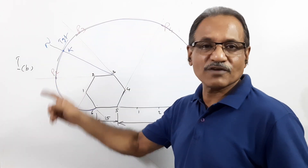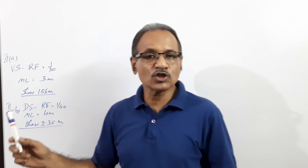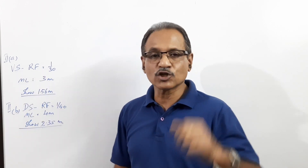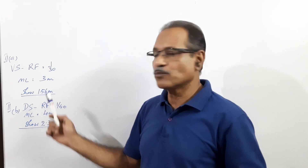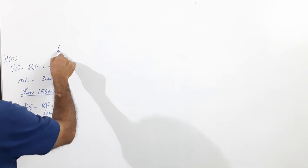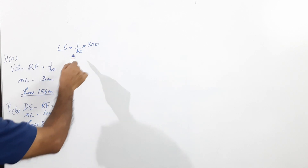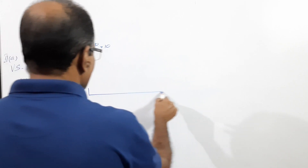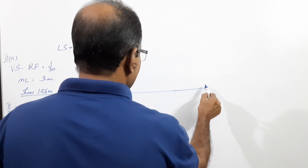Now question 2a of the question paper: draw a Vernier scale with RF 1 by 30, maximum length 3 meters. The scale is to show meters, decimeters, and centimeters, and you must show 1.56 meters on it. Length of scale = RF × maximum length = (1/30) × 300 cm = 10 centimeters. Draw a rectangular strip 10 centimeters long.